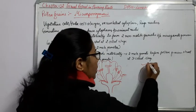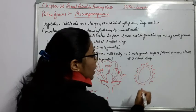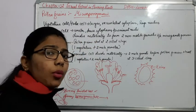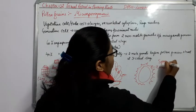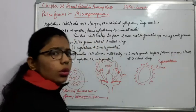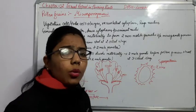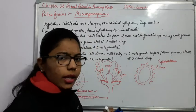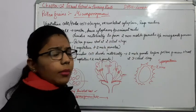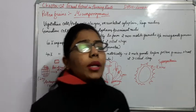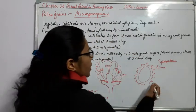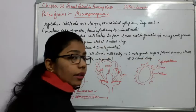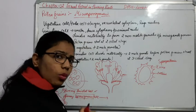The pollen grains have different shapes. The outer structure is known as the exine, which is due to the presence of sporopollenin. The inner continuous part is known as the intine. So the outer one is exine and the inner smooth one is intine.